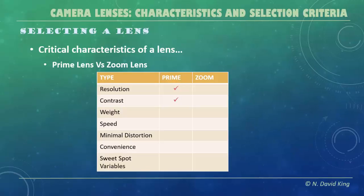The same goes for contrast — all that light bouncing around in a big lens is going to affect contrast, and generally prime lenses have a little better contrast. Weight: a big zoom lens, especially a fast one with image stabilization, is a heavy lens, while prime lenses are a lot lighter to carry around. Speed refers to the aperture — generally, prime lenses are faster than zoom lenses. As for distortion, because it's a much simpler lens, prime lenses generally have less optical distortion than zooms.